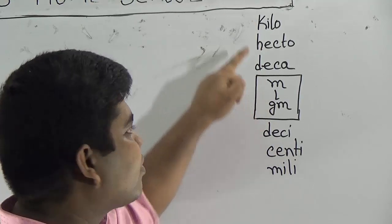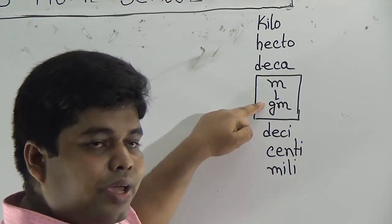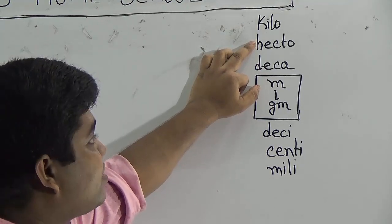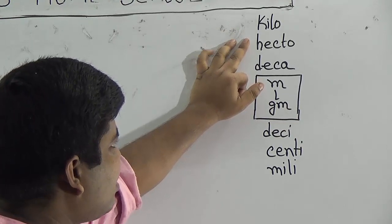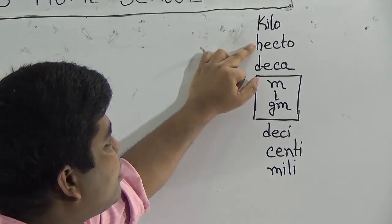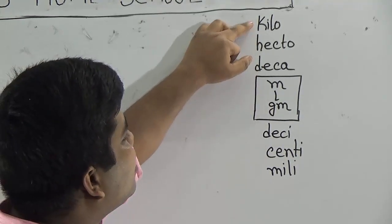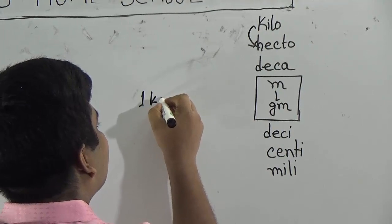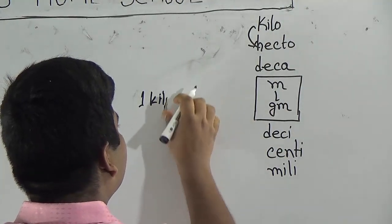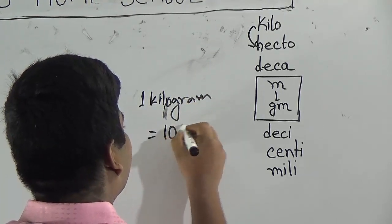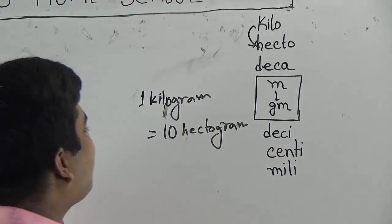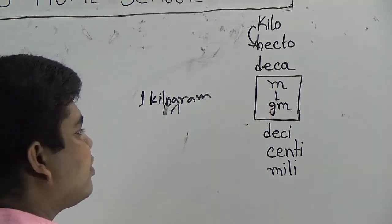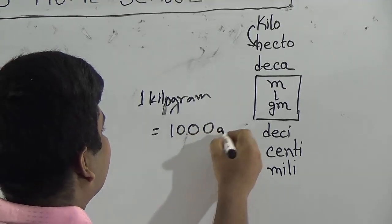We use kilometer, kiloliter, and kilogram. Now, if we want to know 1 kilogram equal to how many hectodecagrams — when we go from one step to another step, we count how many steps it goes. That means 1 kilogram to hectogram is 1 step. For this reason, 1 kilogram equals 10 hectograms. Just like that, 1 kilogram equals 1000 grams.